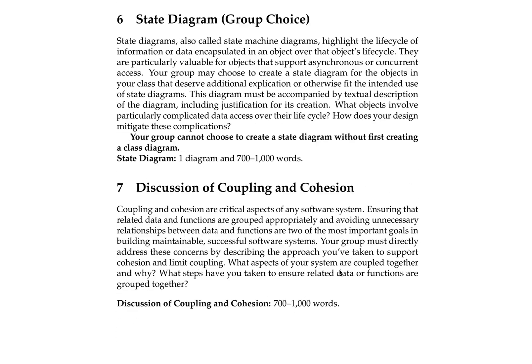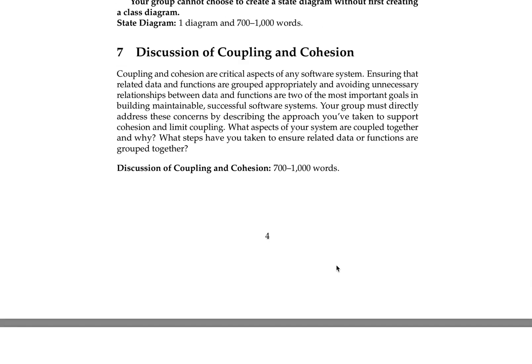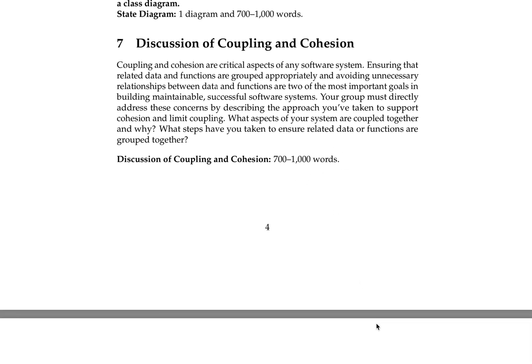The discussion of coupling and cohesion is generally the hardest part of the assignment for a lot of groups. You have to describe all aspects of your system that are coupled together and why that coupling is necessary, describe all related data and functions, and how you've decided to group and break them up. This is a discussion about how you've achieved optimal modularity. It's not easy, but it's relatively short — work at the module level rather than getting bogged down in every single data element.